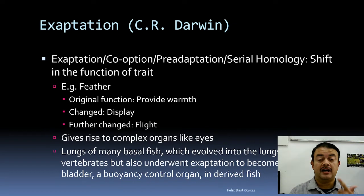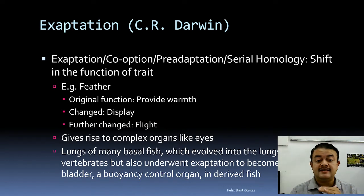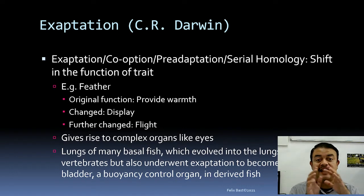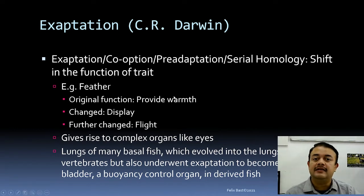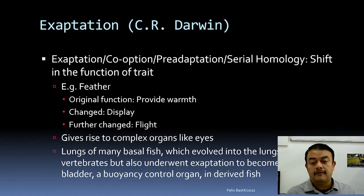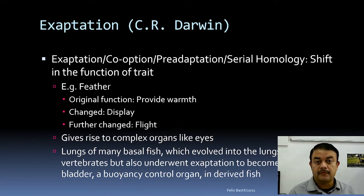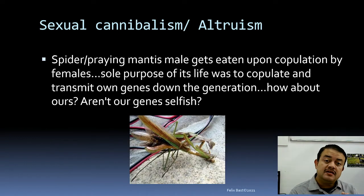Another example: the lungs of basal fish evolved into the lungs of terrestrial vertebrates, but also underwent exaptation to become the gas bladder — a buoyancy control organ — in derived fish. Sexual cannibalism is another interesting example: after mating, the female eats the male. This is a form of altruism — self-sacrifice for a bigger cause.